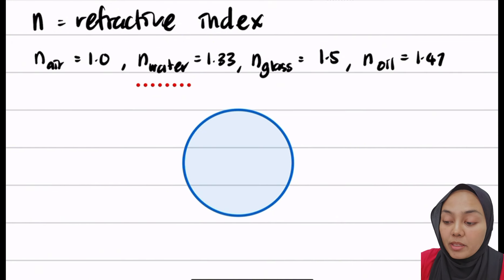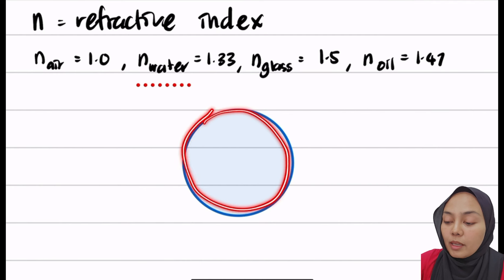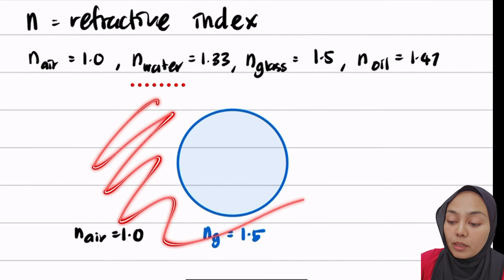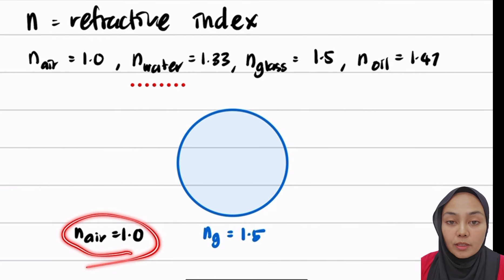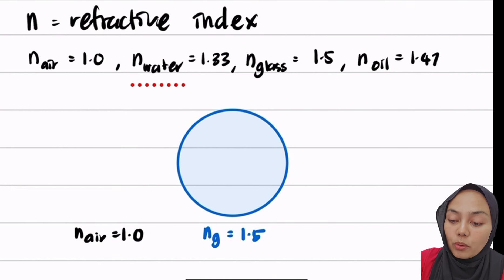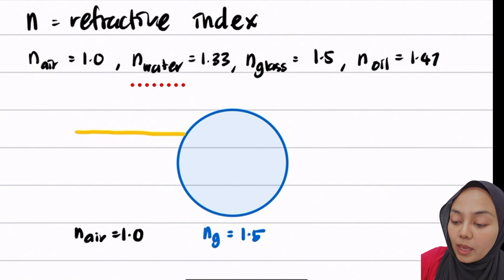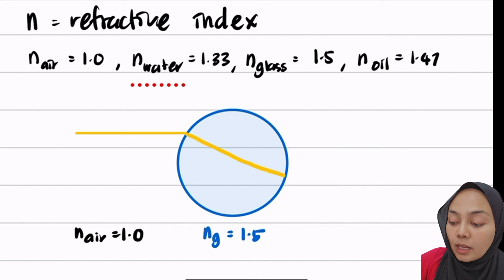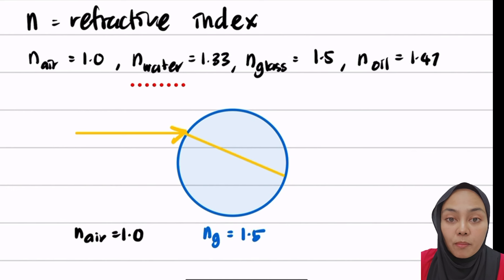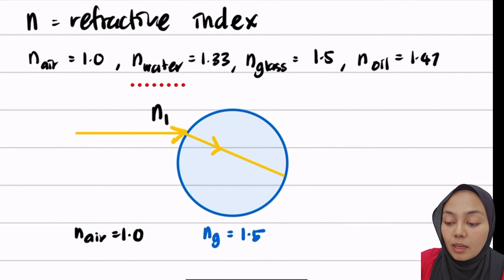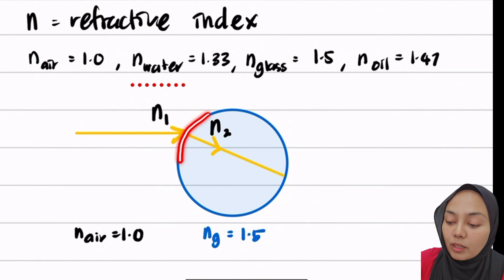Let's imagine we have a glass globe with a refractive index of 1.5 surrounded by air with refractive index 1.0. If the light rays are coming from the air into the glass globe, as they hit the surface they bend closer to the normal. This means air becomes n1 and glass becomes n2 for this particular surface.